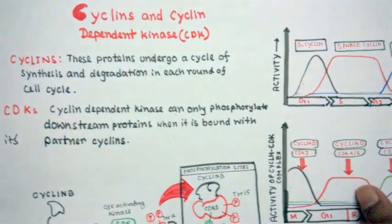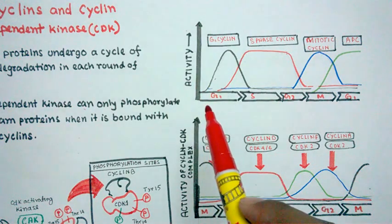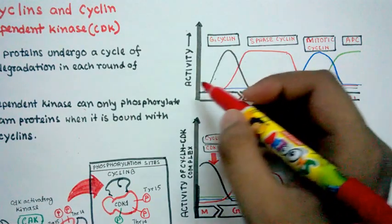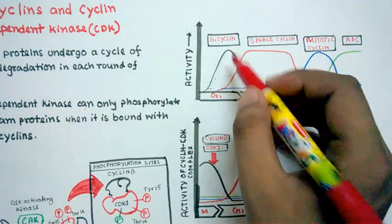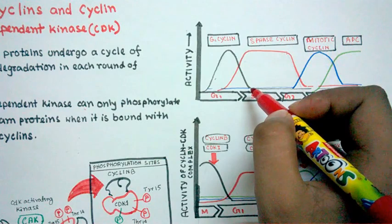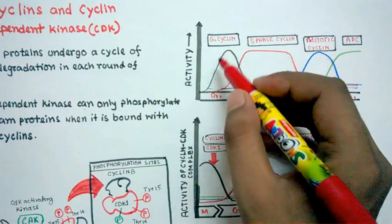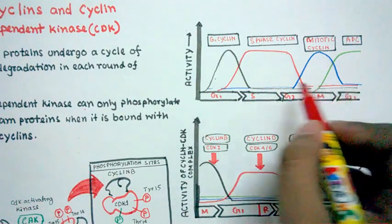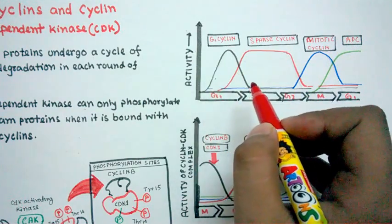This diagram shows cyclin and CDK activity across different cell cycle phases. As you can see, in the G1 phase the level of G1 cyclin gradually increases and reaches its peak at the end of G1, and after G1 the level of G1 cyclin gradually decreases. The activity of G1 cyclin is restricted to the G1 phase; after G1 you won't see any activity.